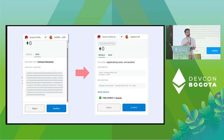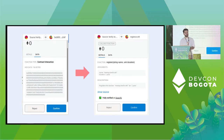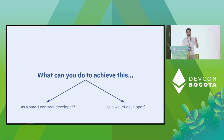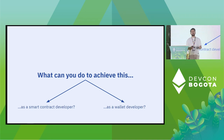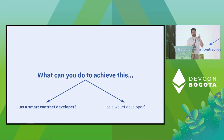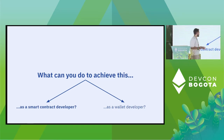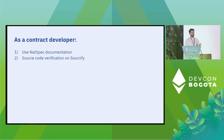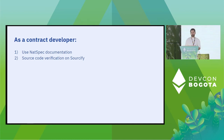We have a lot of things we can do to improve the user experience. There are two sides to this coin — things you can do as the wallet developer, and things you can do as the smart contract developer. The first thing you can do as a smart contract developer is use NatSpec documentation, as well as doing source code verification on Sourcify.